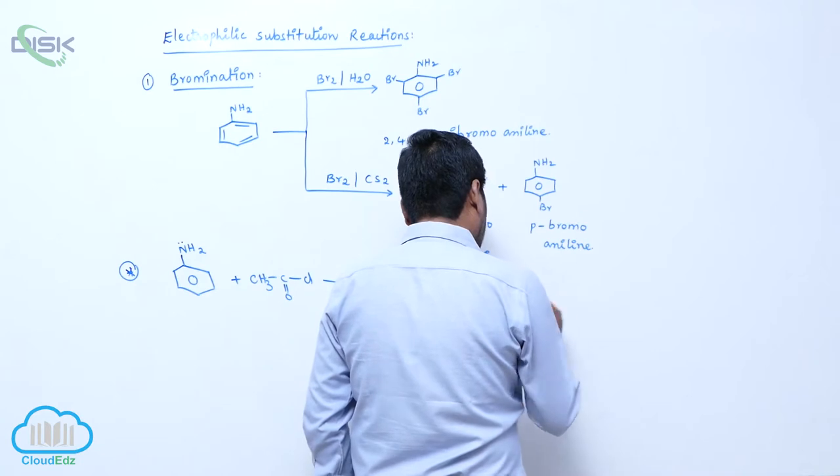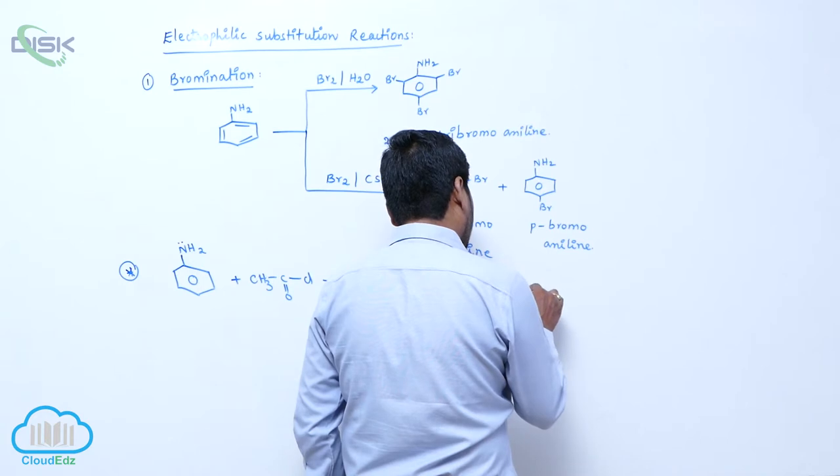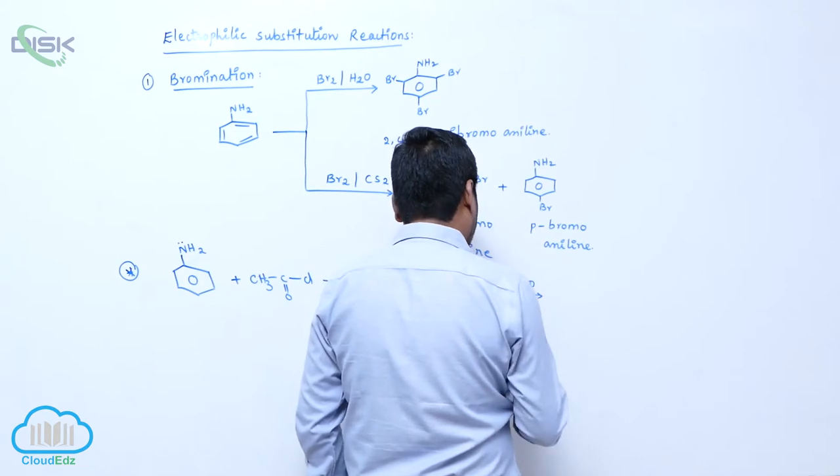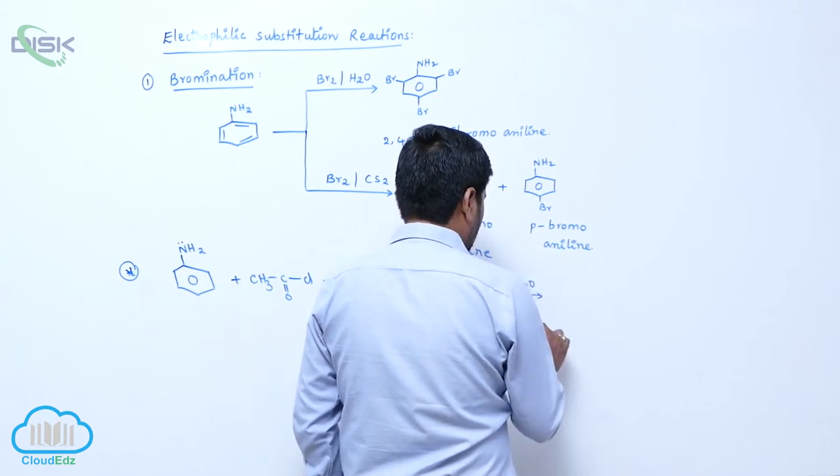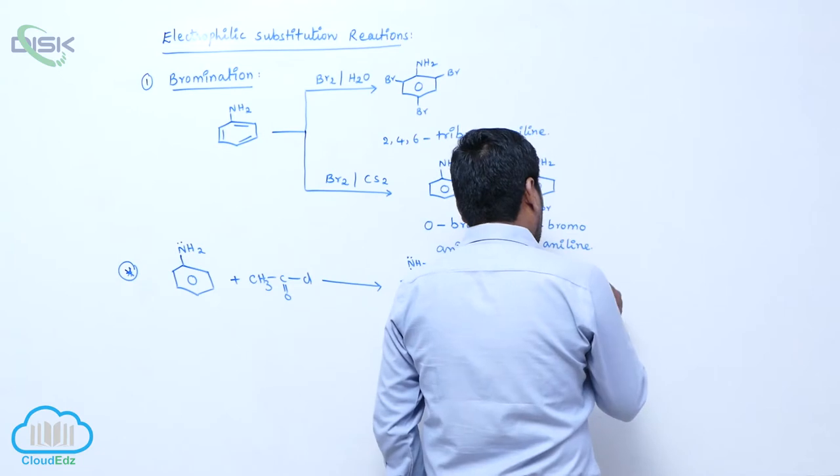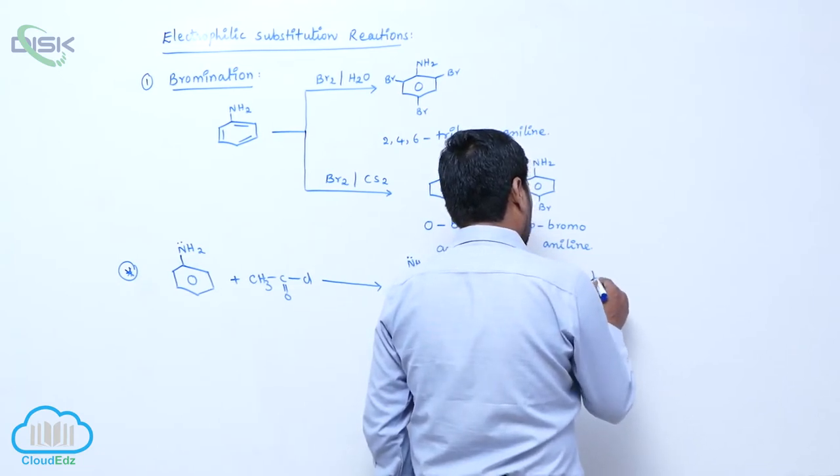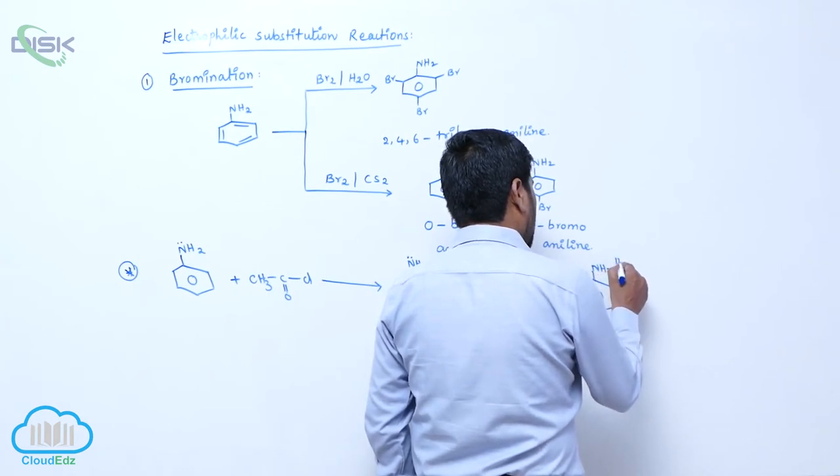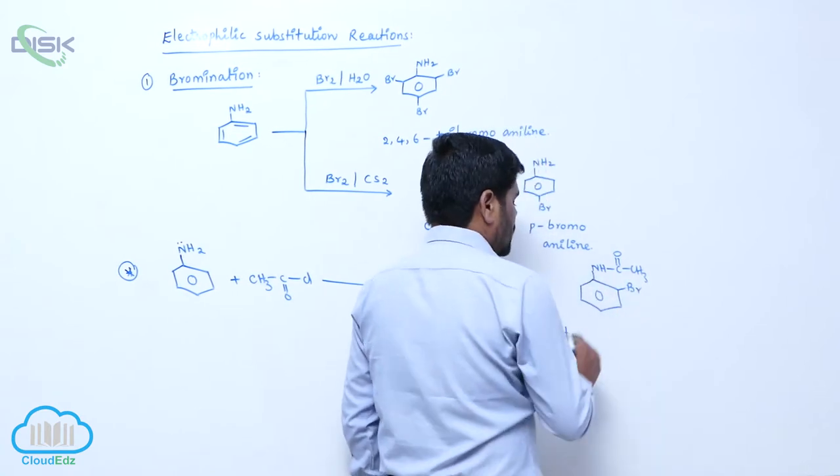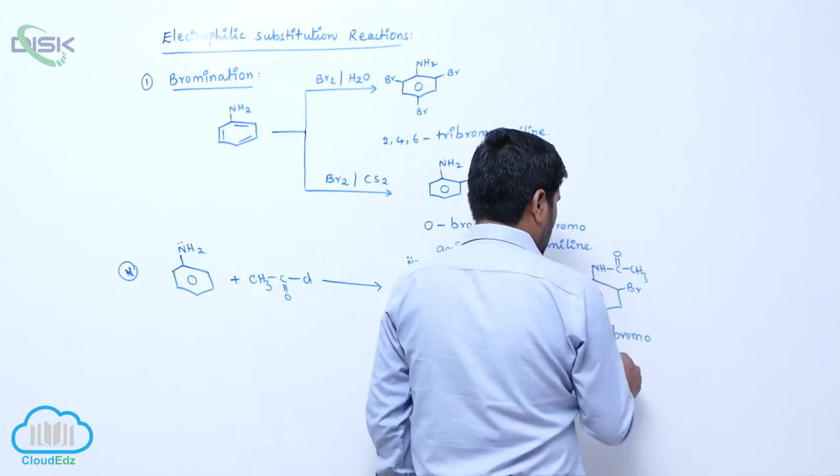Now when bromine in presence of water is added or acetic acid, bromine in presence of acetic acid, now selective bromination takes place forming NH-CO-CH3 with Br, this is known as orthobromoacetonilide.